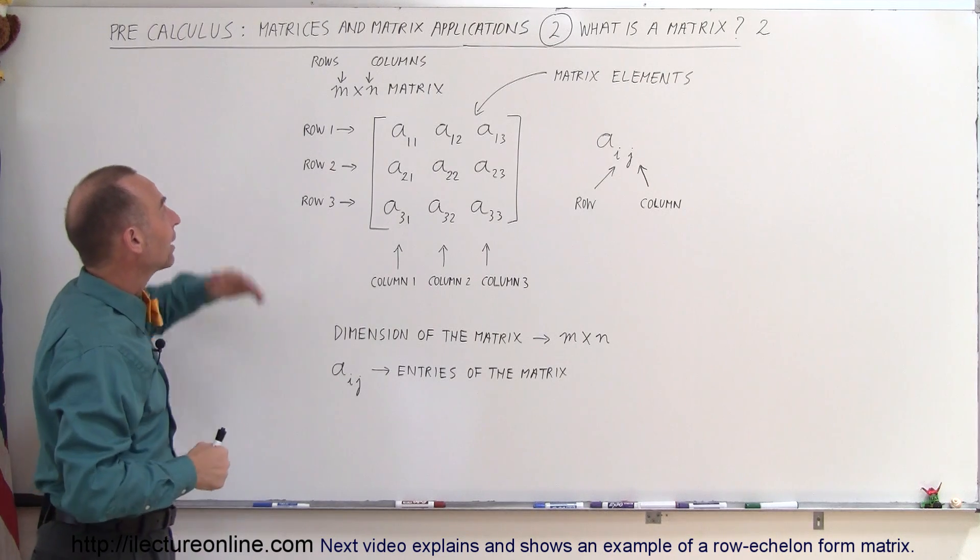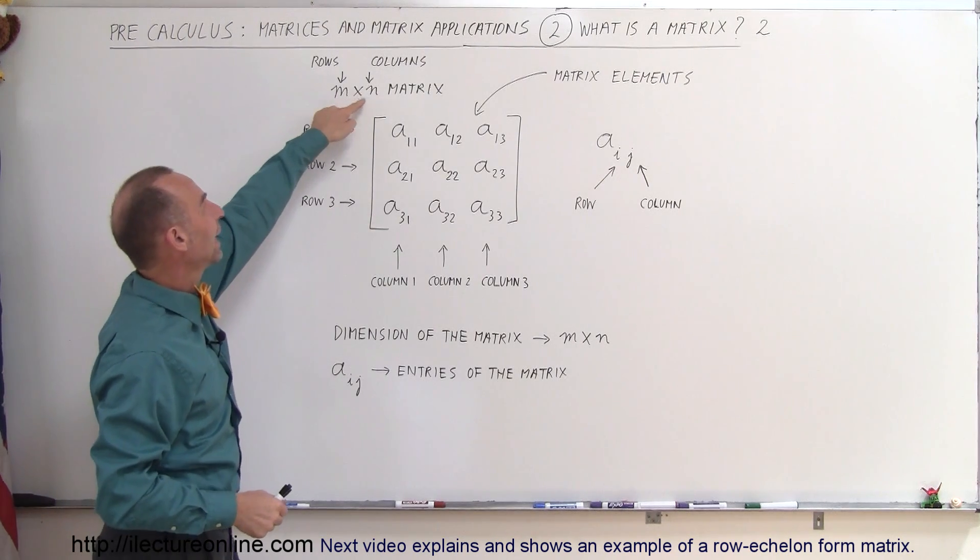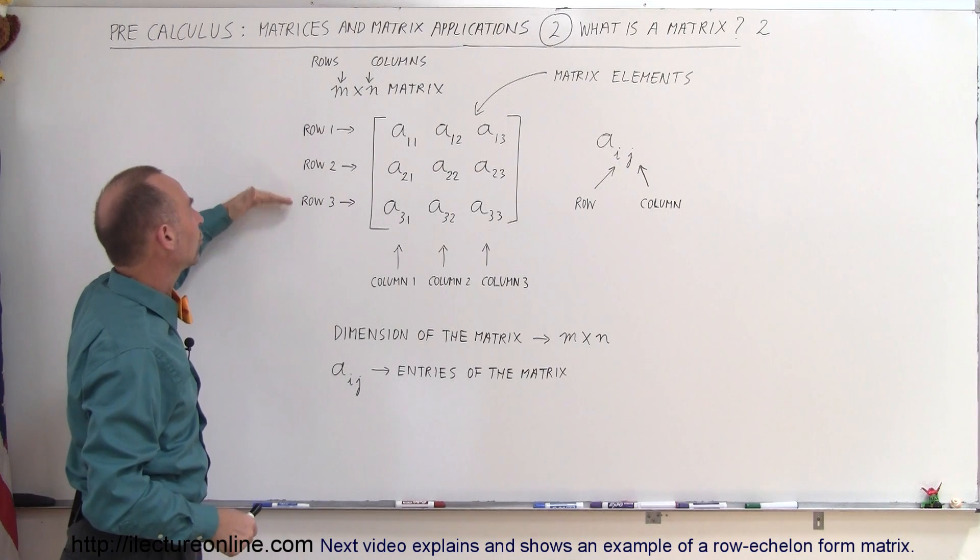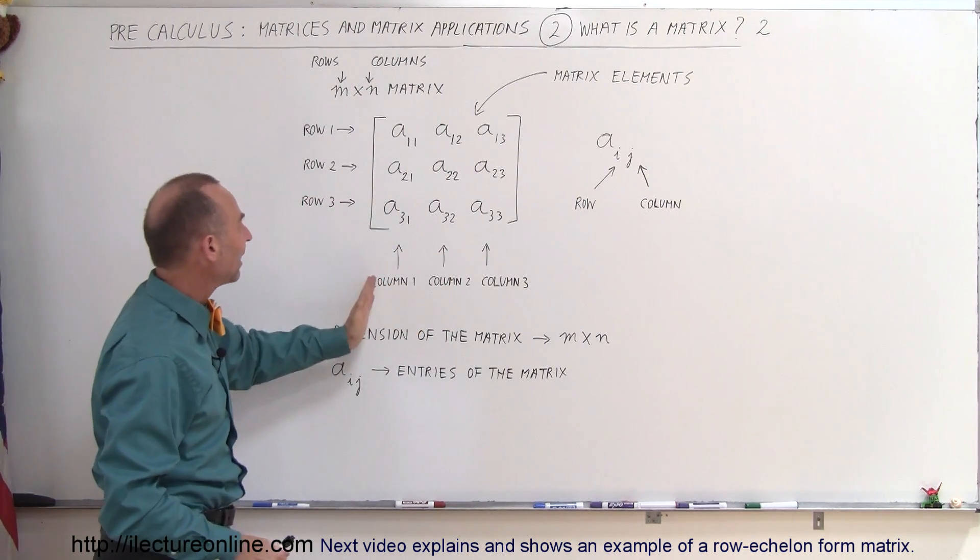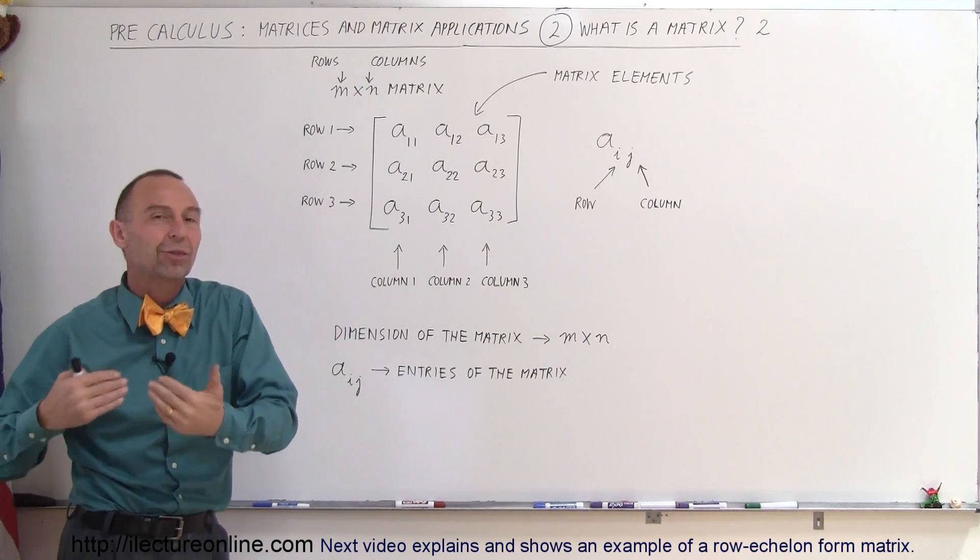Well, remember again that the matrix has m rows and n columns. So here there are three rows, so in this case m equals 3, and there are three columns, so n equals 3. This is a 3 by 3 matrix.